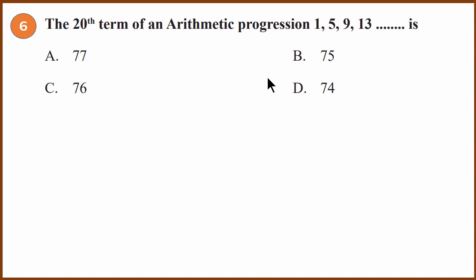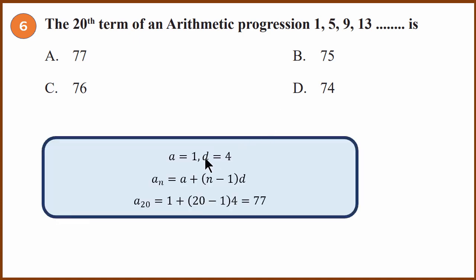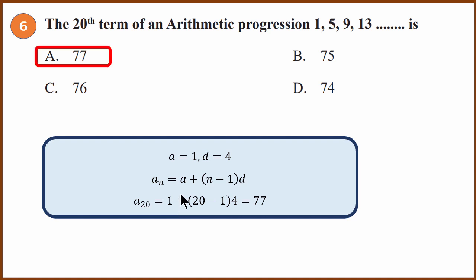Sixth question: find the 20th term of an arithmetic progression 1, 5, 9, ... First term a = 1, common difference d = 4 (since 5 − 1 = 4 and 9 − 5 = 4). Substituting into the formula: A20 = 1 + (20 − 1) × 4 = 1 + 19 × 4 = 1 + 76 = 77. The answer is 77.